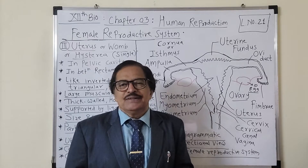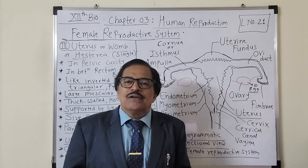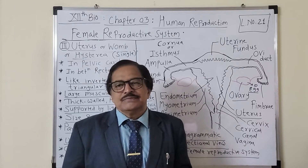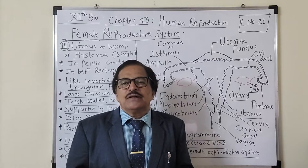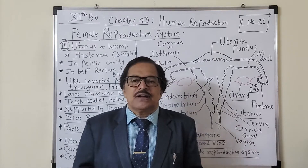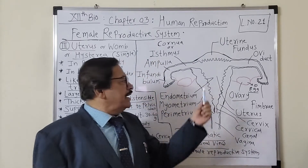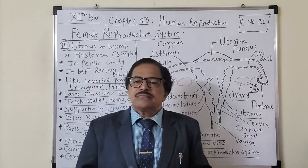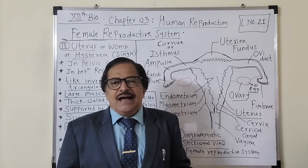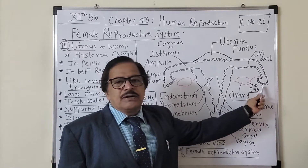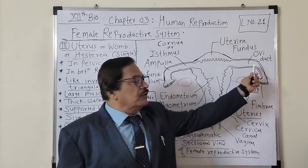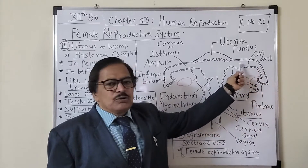Inside the ovary, eggs are produced regularly in a cyclic manner — this is the process of ovulation. Ovulation occurs regularly every 28 days, on the 14th day of the menstrual cycle. The egg comes out from the ovary into the abdominal cavity, and is then captured by the fimbriae of the infundibulum and pushed into the oviduct.